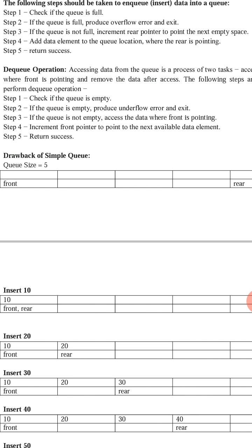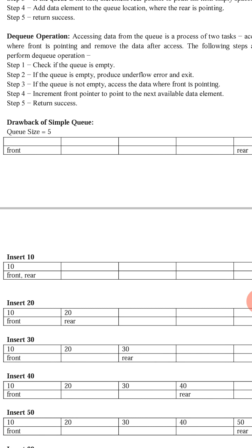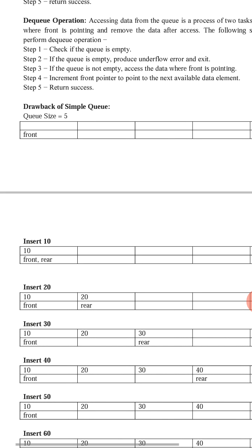The display function is straightforward. Before displaying, check whether the queue is empty. If empty, output an error message and exit. If not empty, initialize a variable i to the front pointer, iterate through the queue using i, and display all the elements present in the queue.